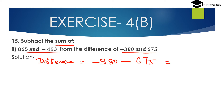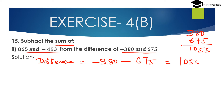We have to compute minus 380 minus 675. When we add two integers with equal sign, we have to add the integers without sign first: 380 plus 675 equals 1055. And both are of negative sign, so we have to place the negative sign before the integer. The difference is minus 1055.